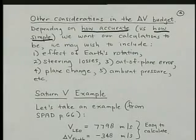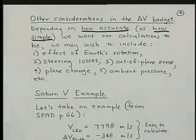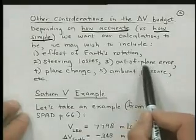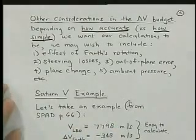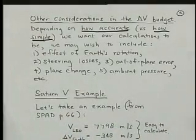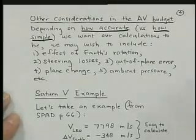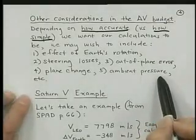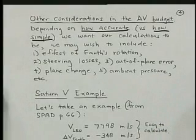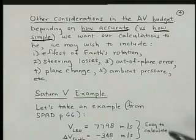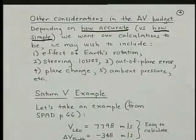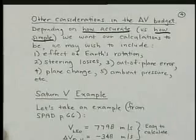You could have misalignments in the thruster, the way it's mounted on the vehicle. You may have some out-of-plane effects, which could be errors or also some plane changes that you're intending to do if you're going to an orbit that's inclined differently than it would be if you just stayed in the plane. You have the ambient pressure effect as a rocket goes up into orbit. The atmospheric density drops off, and rocket propulsion systems become more efficient when the ambient pressure drops off. That means that they're less efficient when you're on the ground at sea level.